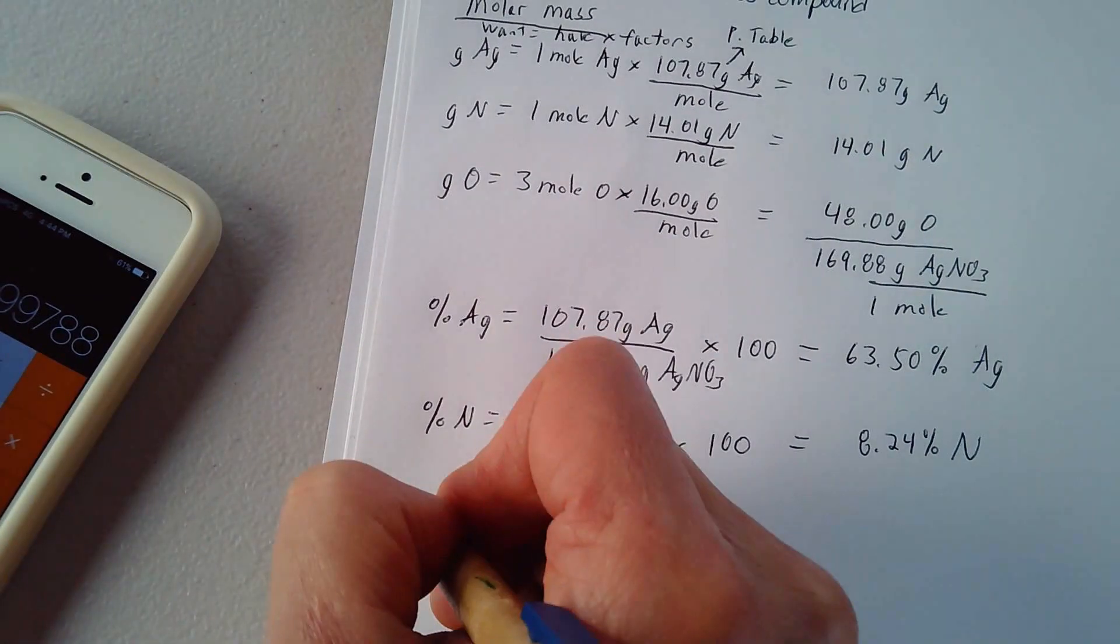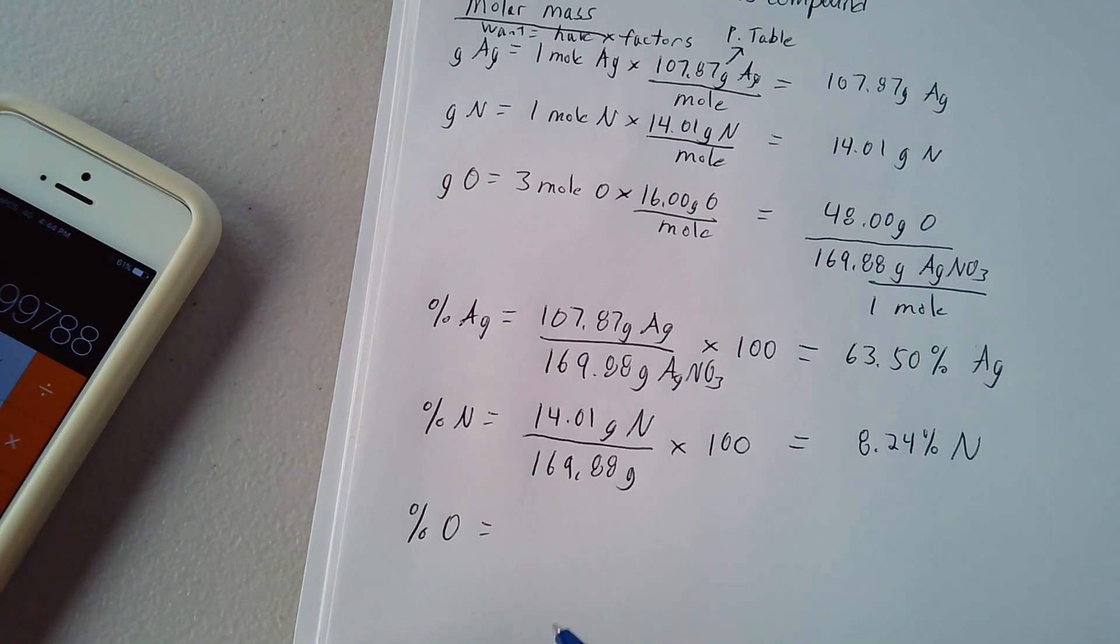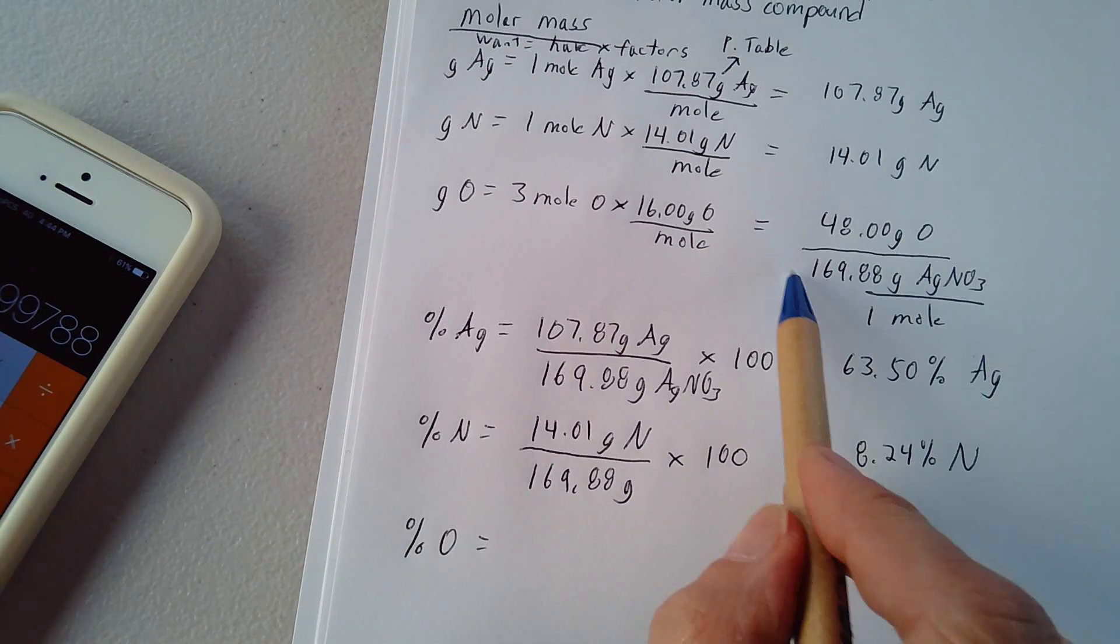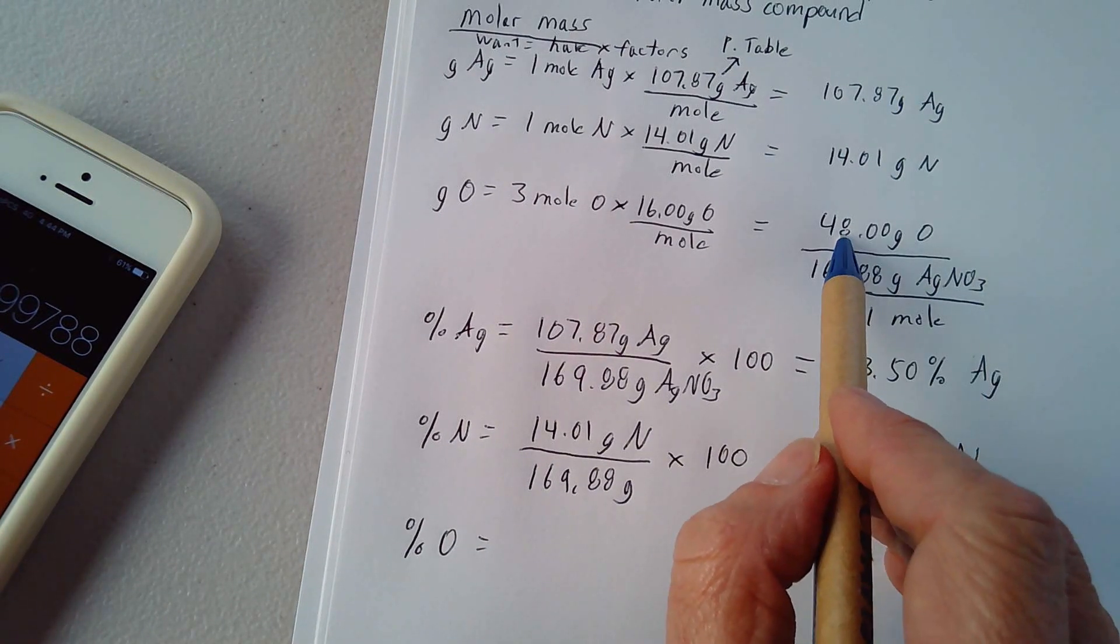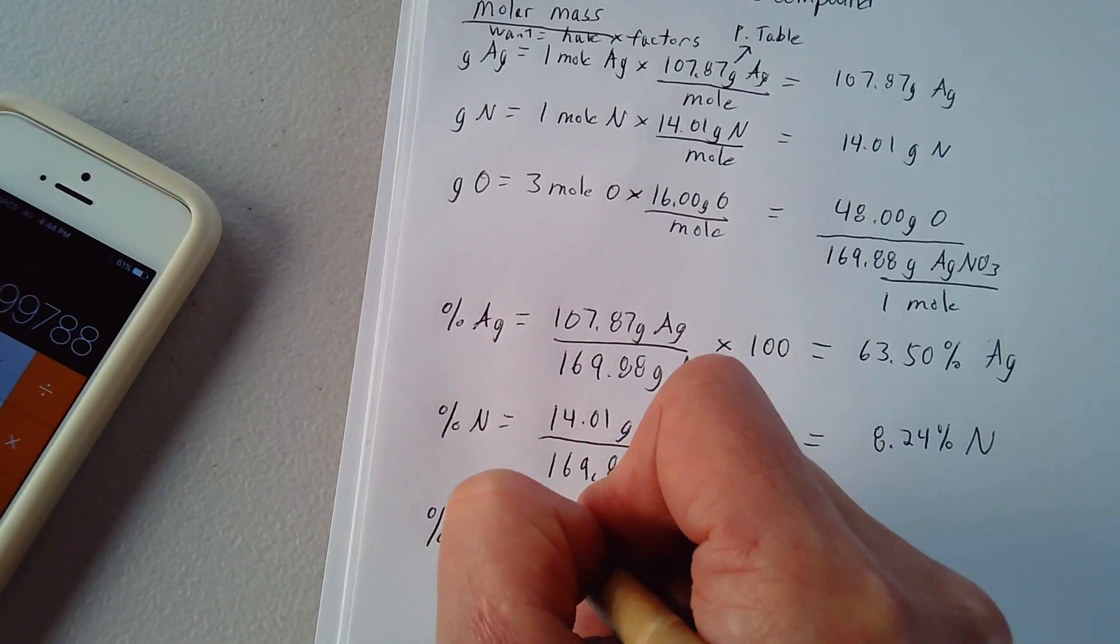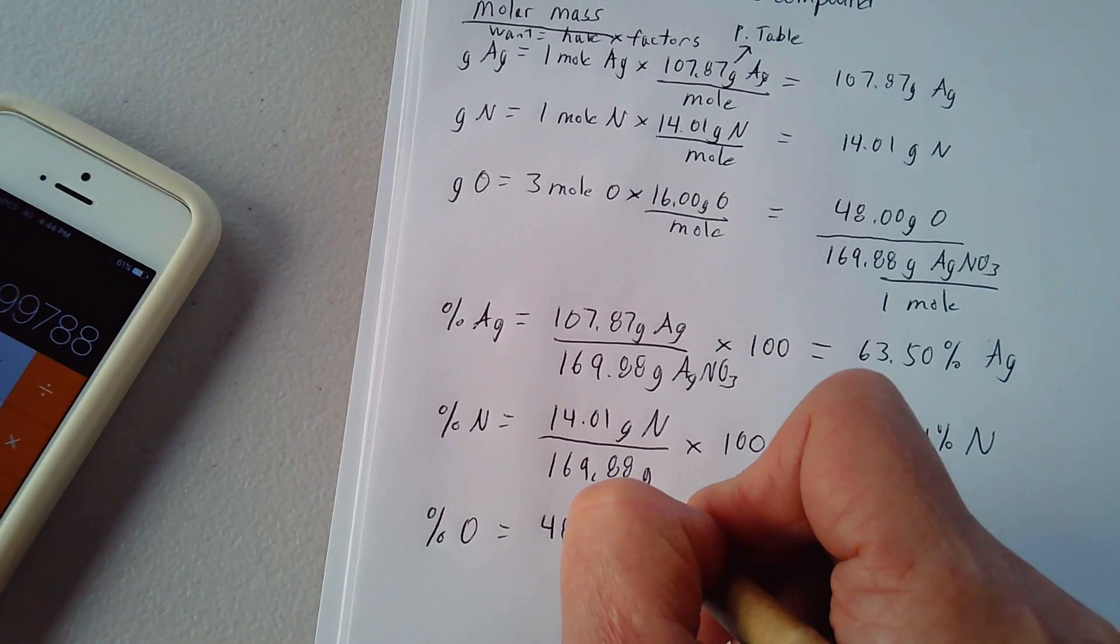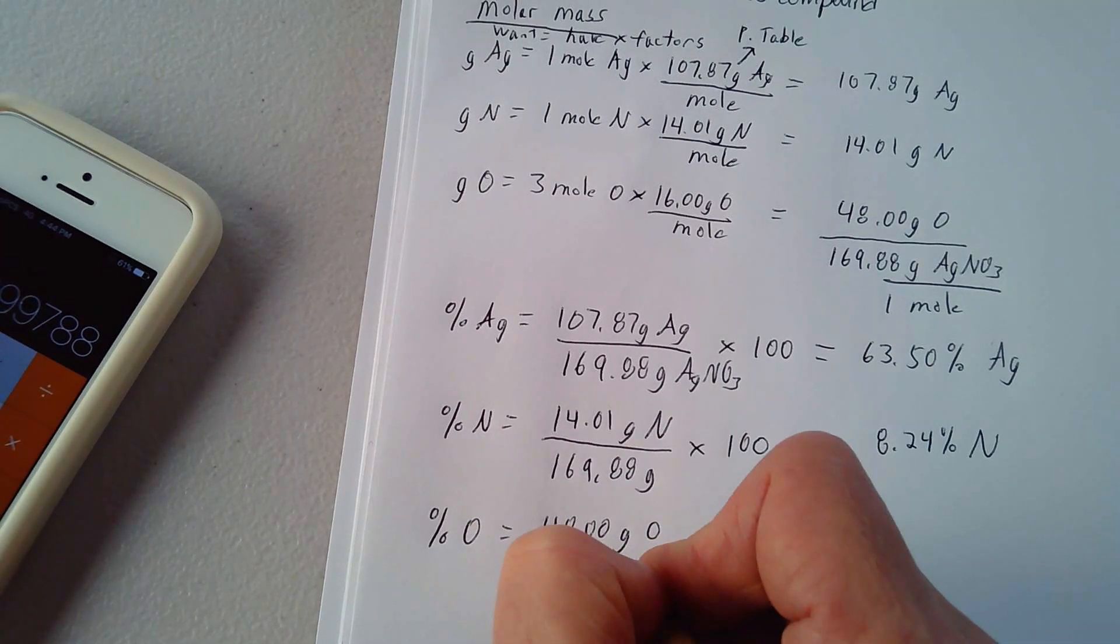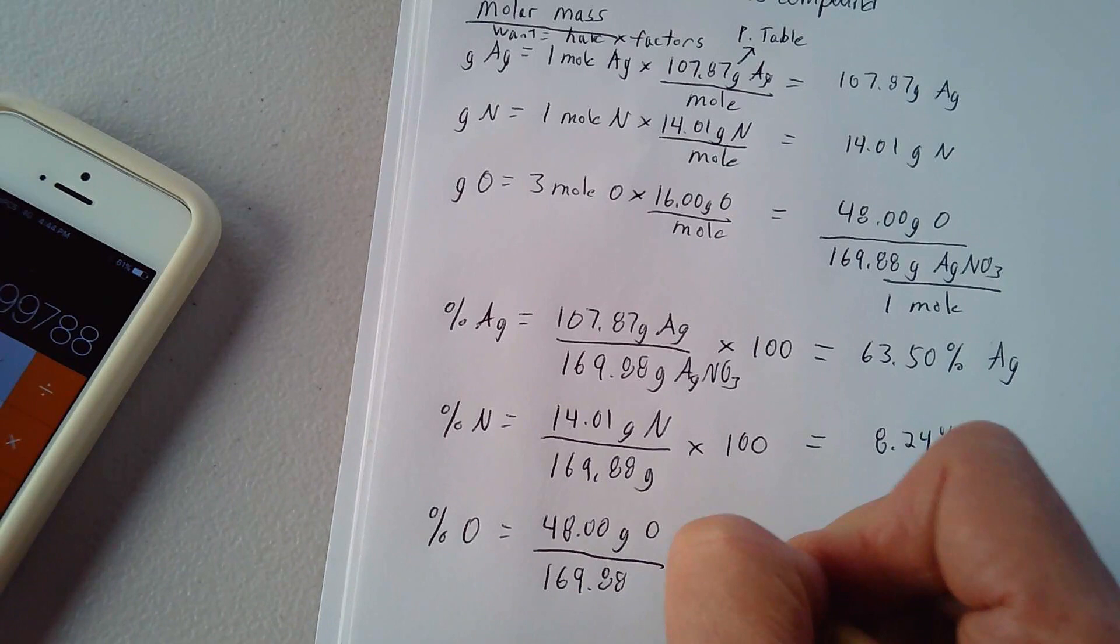This would be silver. And finally, let's calculate the percent oxygen. Percent oxygen is equal to, well out of that entire 169.88 grams, 48 of those grams are oxygen. So you go 48.00 grams oxygen out of 169.88 times 100.